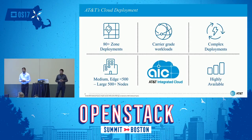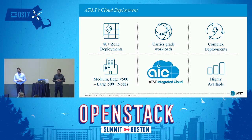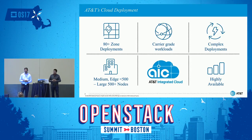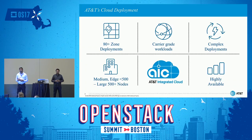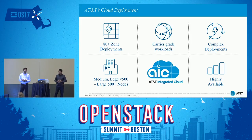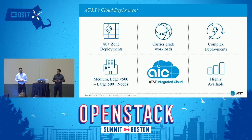Before we go into the technical aspects, I'd like to provide an overview of what AT&T Cloud Deployment is about. The AT&T Integrated Cloud is deployed at more than 80-plus locations, running carrier-grade workloads including NFV and other enterprise workloads. Supporting telco applications involves more than just a VM — it requires proper networking connectivity, SDN solutions for complex networking, and the AIC nodes range from small to large deployments with 500-plus compute nodes.